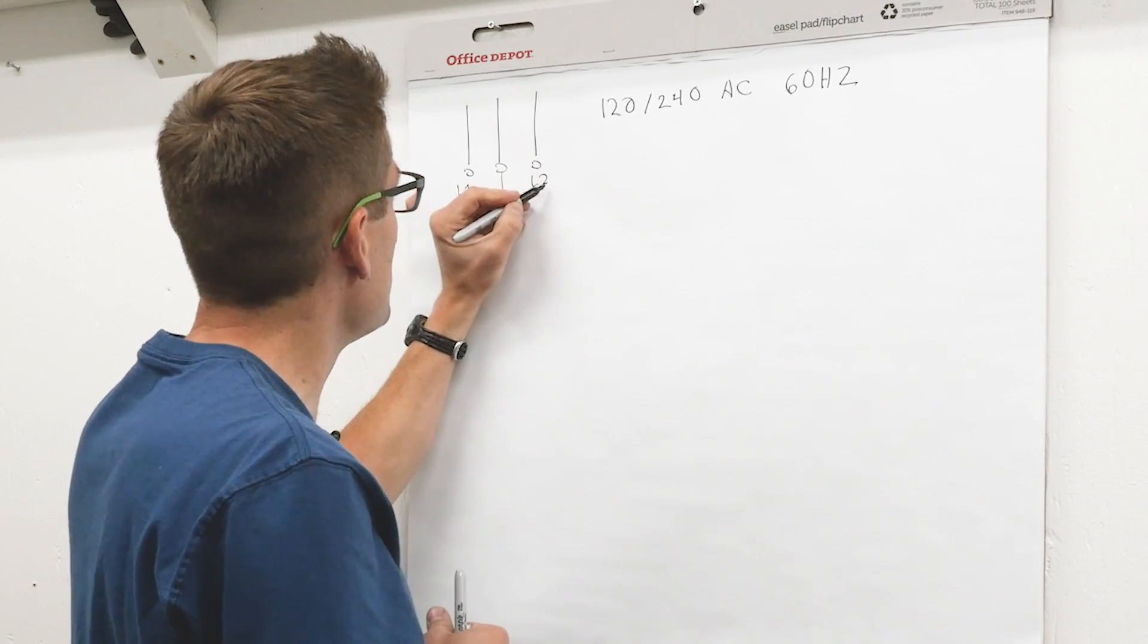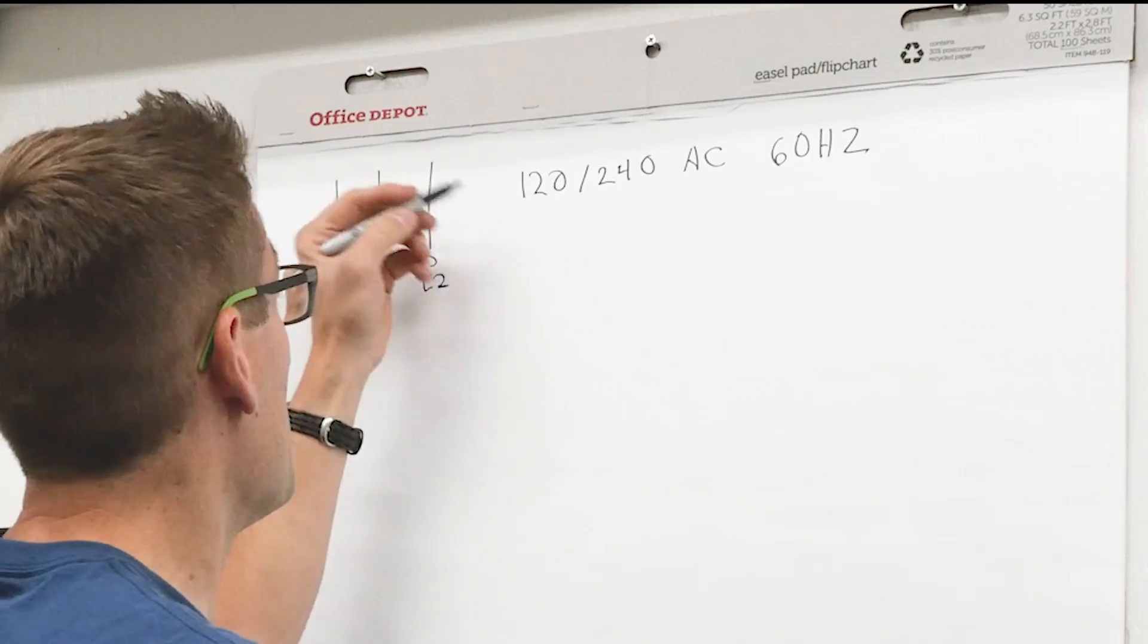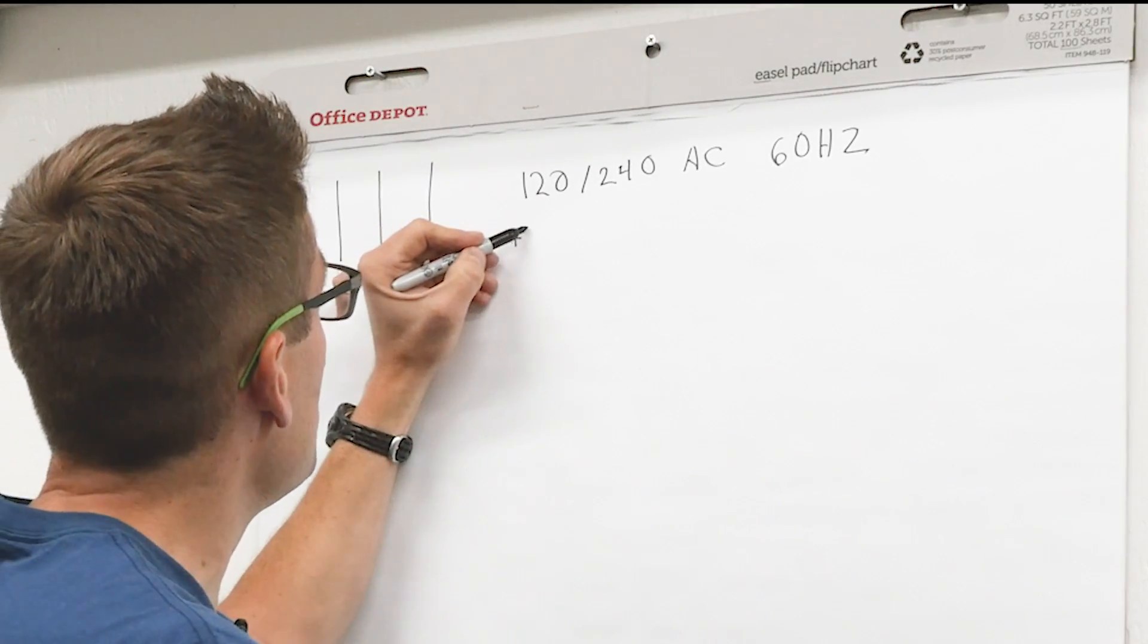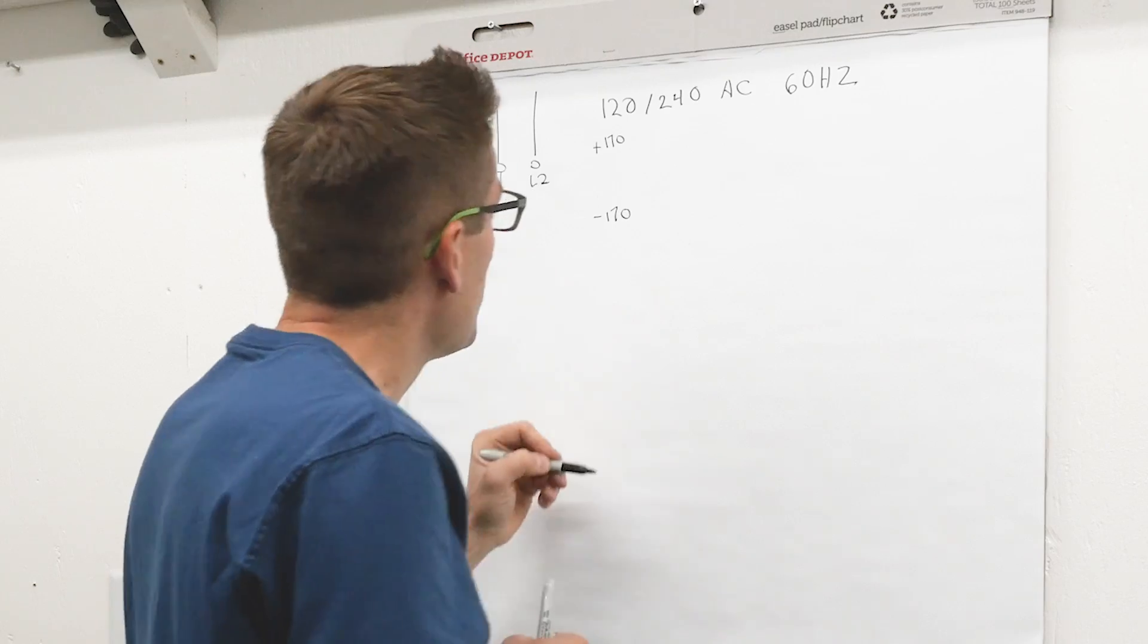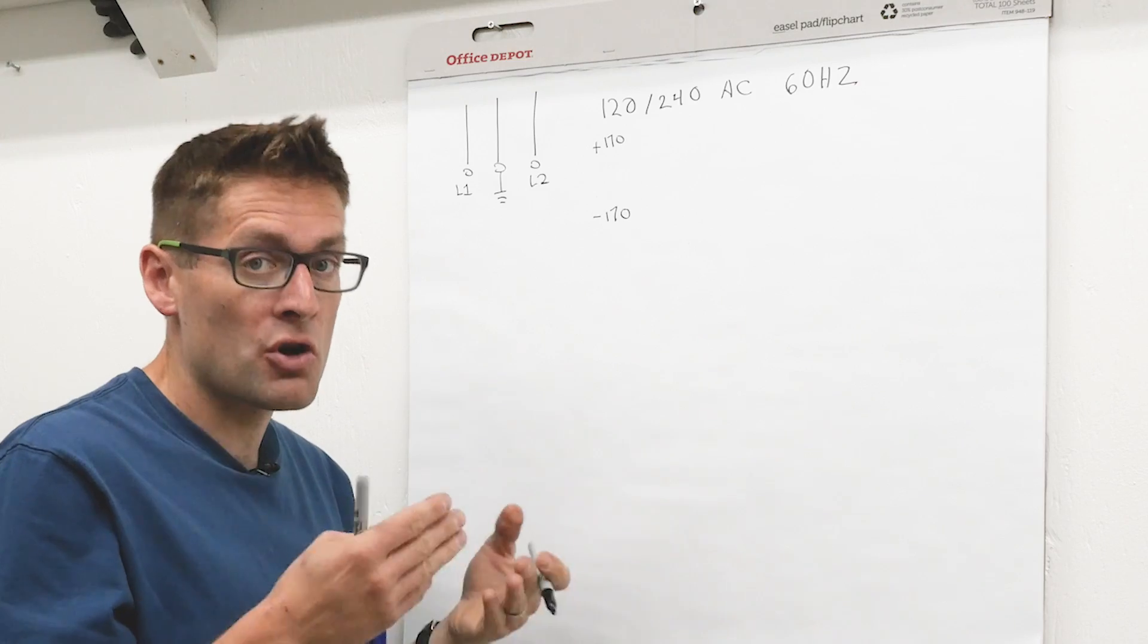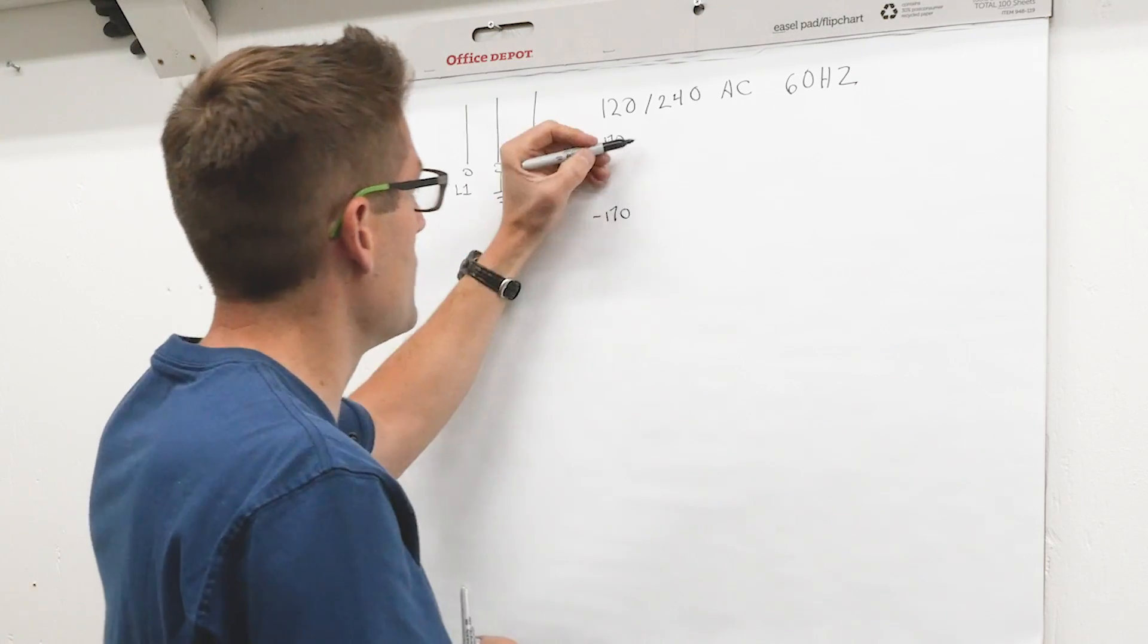Those are the two hot legs that are going to be alternating here in North America between about plus 170 and negative 170. That's not 120 volts, correct, but it does average out. I'll talk about that in just a second to about 120.